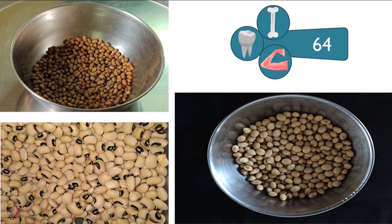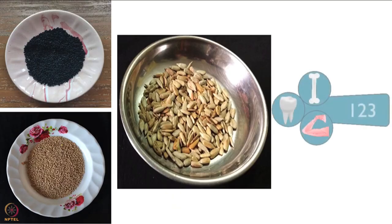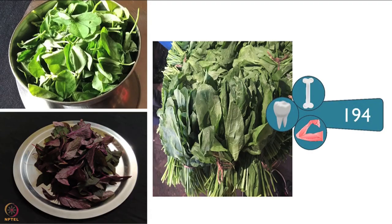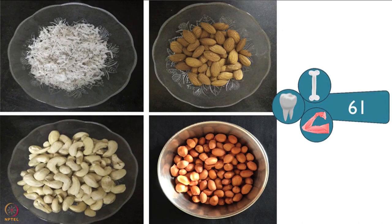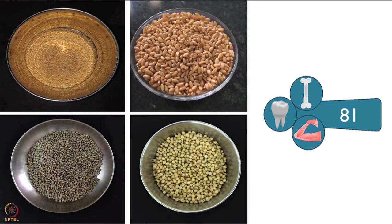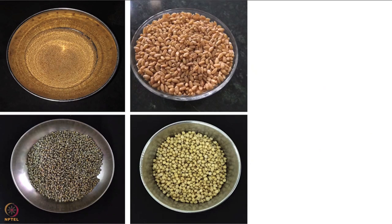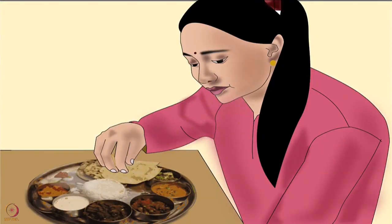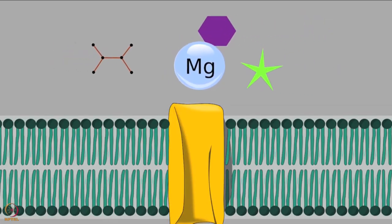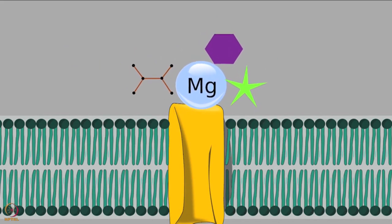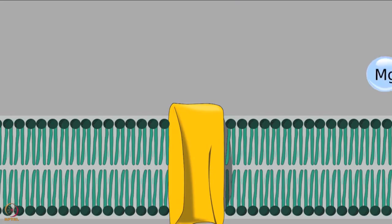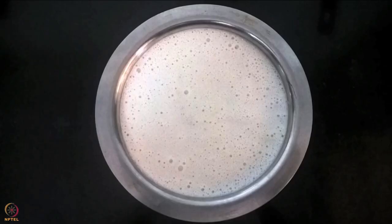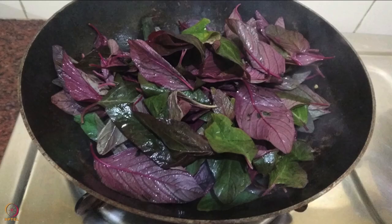30 grams of beans have around 64 milligrams of magnesium. 2 tablespoons of seeds have roughly 123 milligrams. 100 grams of leafy vegetables have about 194 milligrams. 20 grams of nuts have around 61 milligrams and 30 grams of grains have nearly 81 milligrams. Although we can get magnesium through diet, its absorption is also important. Phytates and oxalates present in the food hinder absorption of magnesium. Fiber also has the same effect.